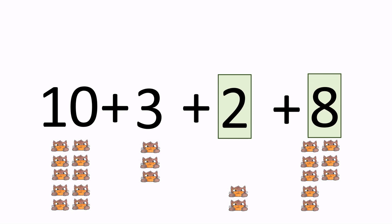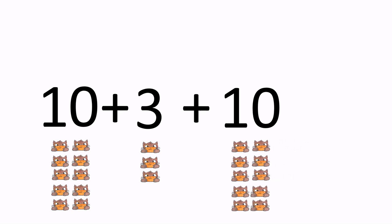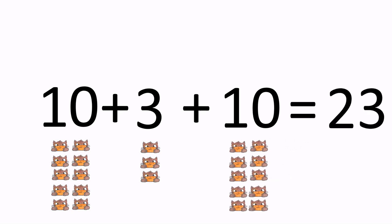We can now add 2 to 8 to have 10. That way, we have 10 plus 3 plus 10, and 10 plus 3 plus 10 is 23. That is much easier to add than 15 plus 8. To find the answer to this math problem, we decompose the numbers we were adding to make groups of 10.